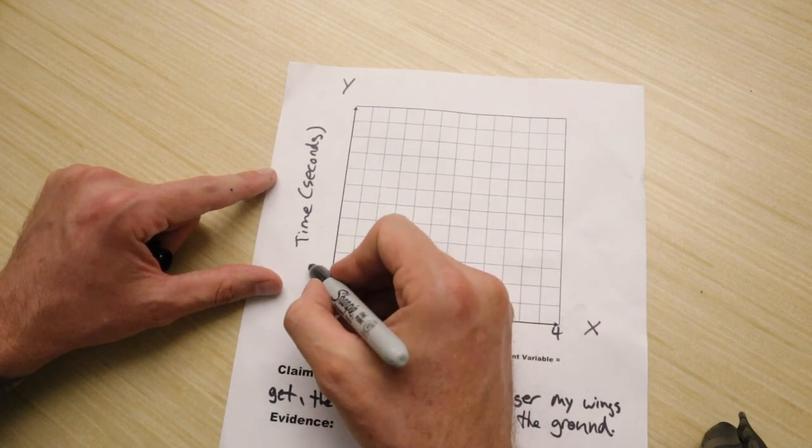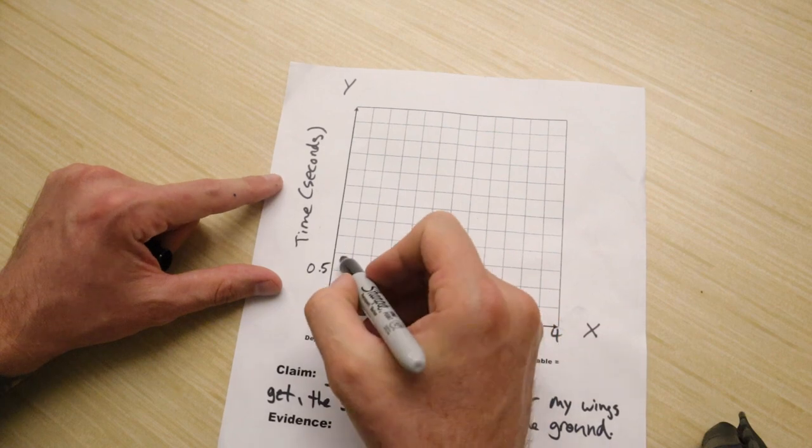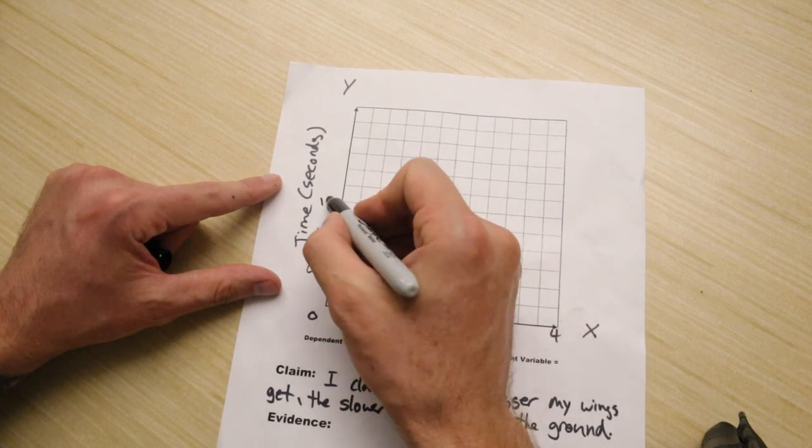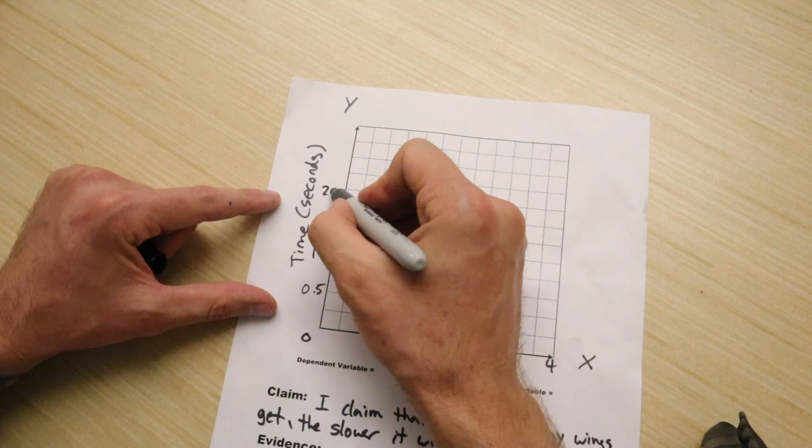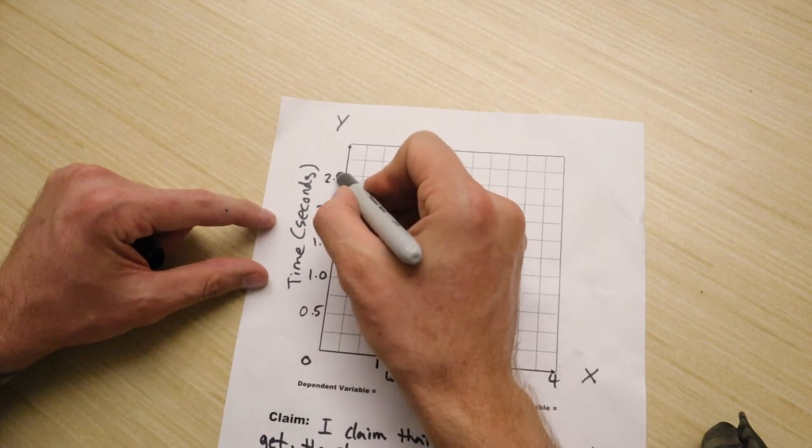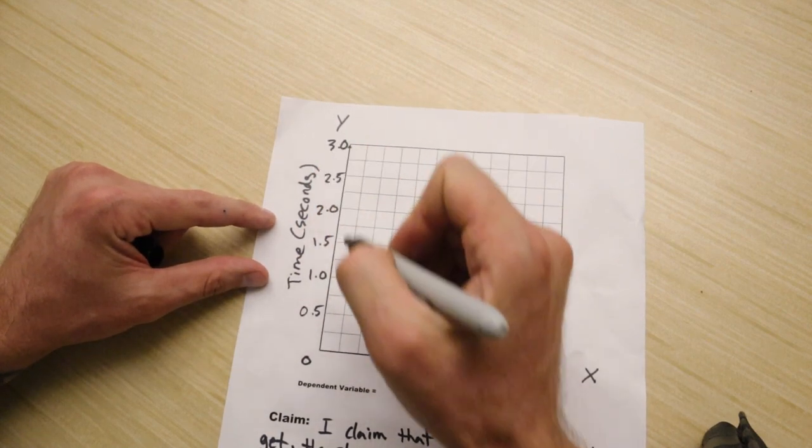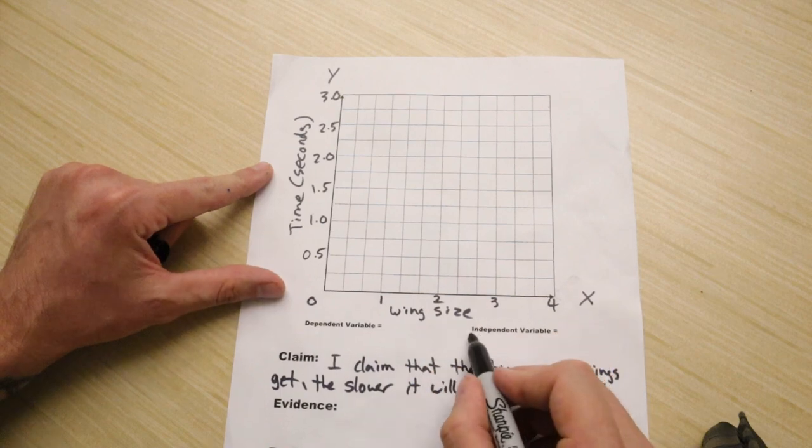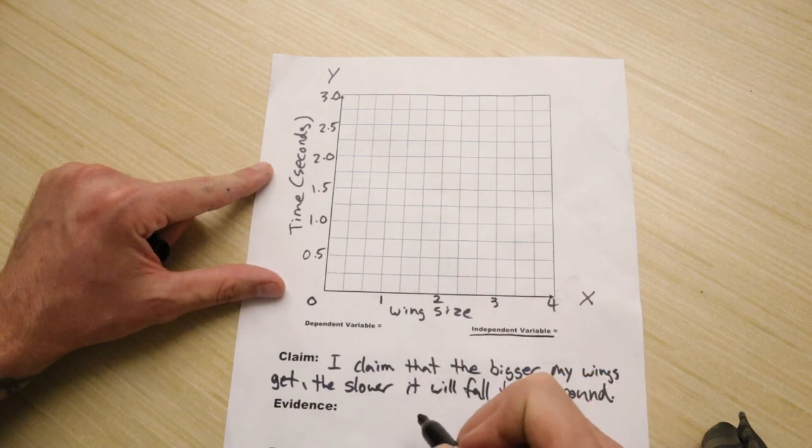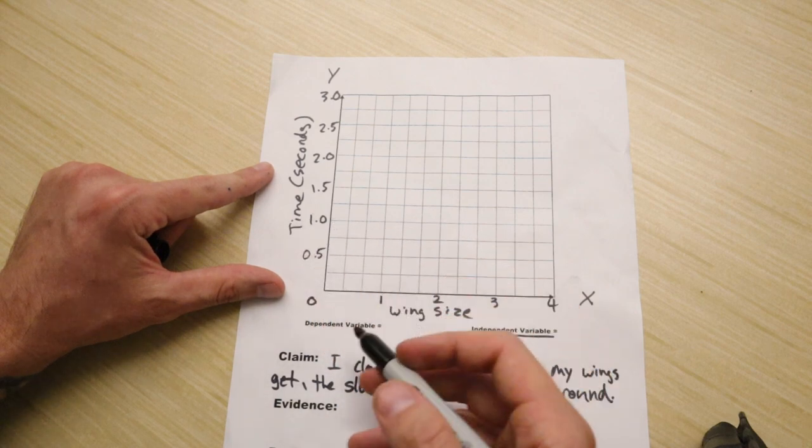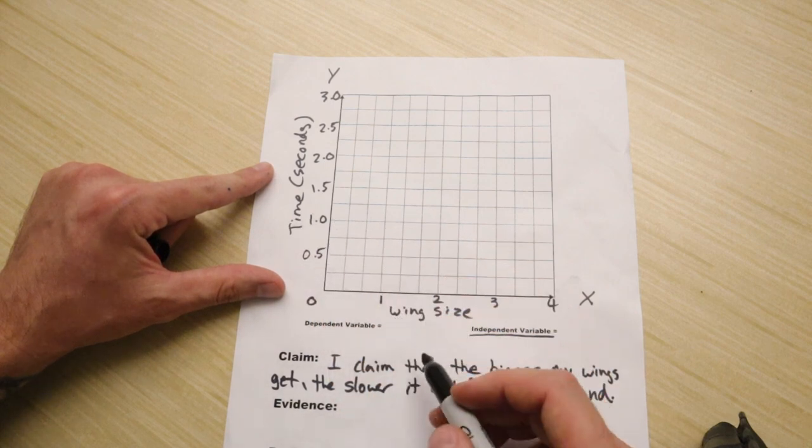So my wing size is what you call an independent variable. And then my time is the dependent variable because the time depends on my wing size.